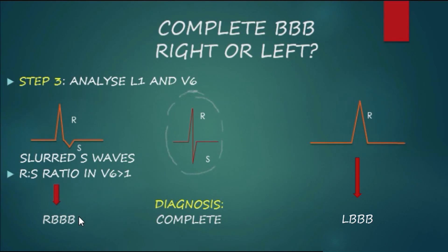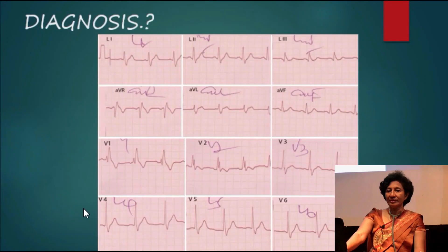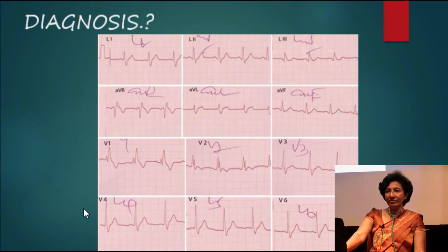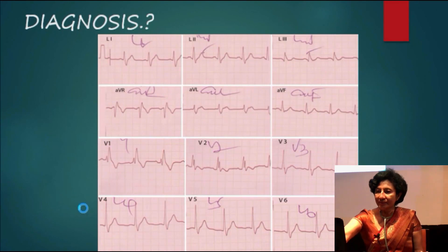In summary, the three features to look for in right bundle branch block are: first, the rhythm should be either sinus rhythm or atrial tachyarrhythmia; second, lead V1 should show RSR' morphology; third, leads 1 and V6 should show slurred S waves, and the RS ratio in lead V6 should be more than 1. If all these are present, your diagnosis is complete right bundle branch block.